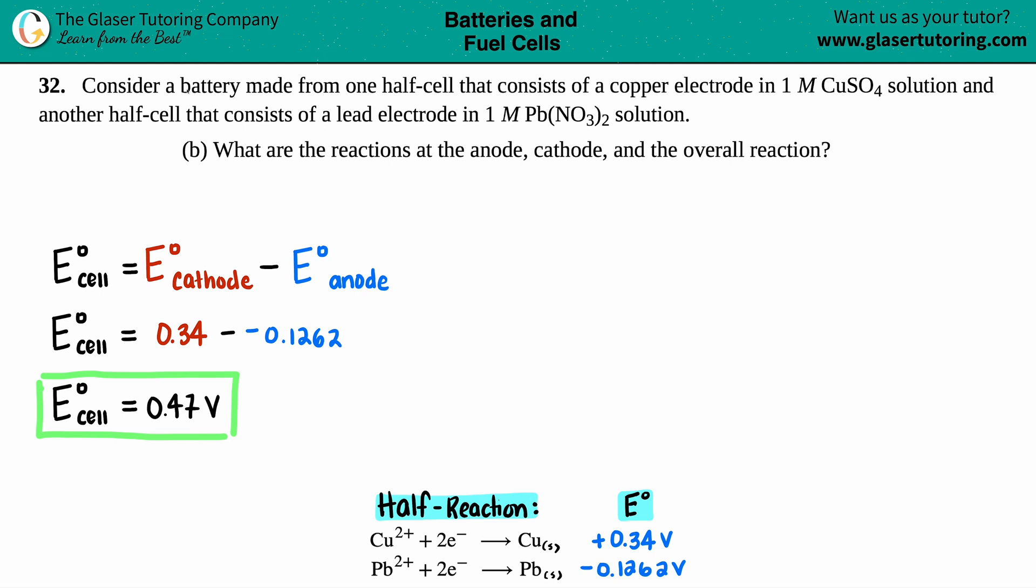Number 32, consider a battery made from one half cell that consists of a copper electrode in one molar CuSO4 solution and another half cell that consists of a lead electrode in one molar Pb(NO3)2 solution. In this question it says what are the reactions at the anode, the cathode, and the overall reaction?